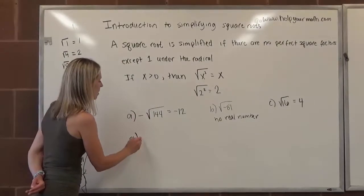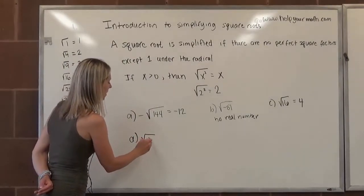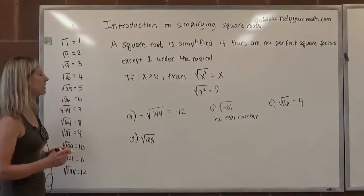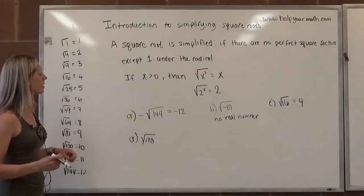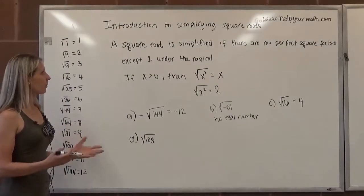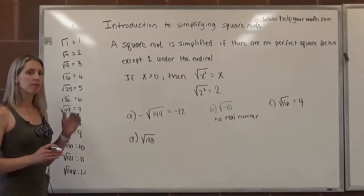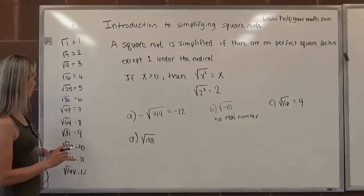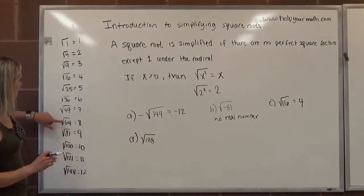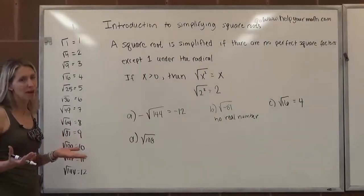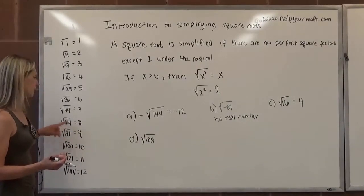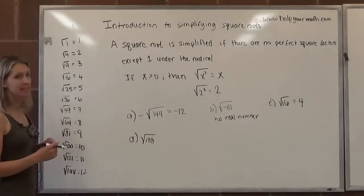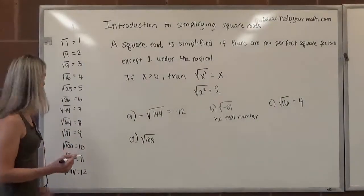Letter D, we want to simplify the square root of 108. So 108 does not appear on my list. It looks like it's in between 10 and 11, which isn't that helpful. What we're looking for then, if we're going to simplify it, is we're going to find a perfect square factor. So 108, let's start with some of these bigger numbers. Does 64 go into 108? You can check with your calculator. No, it doesn't. Does 49 go evenly into 108? No. How about 36? And the answer is yes, 36 does.